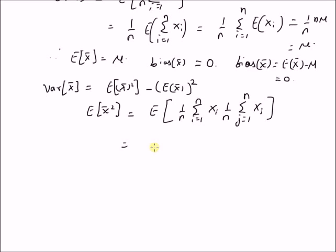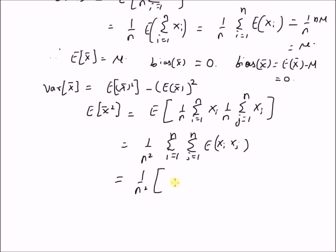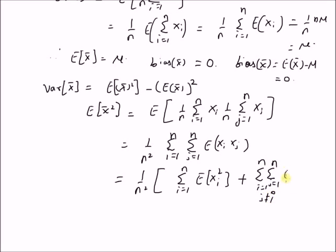By rearranging the terms, we have 1/n squared, and since expectation is a linear operator, we have the double summation i=1 to n and j=1 to n of expectation of X_i times X_j. For values of j equal to i, we have 1/n squared times summation i=1 to n of expectation of X_i squared. For j not equal to i, since X_i and X_j are independent of each other, expectation of X_i times X_j becomes the product of expectations.